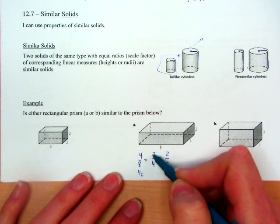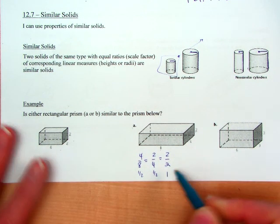So this is a half, this is a half, but this is 1. So these guys are not similar.